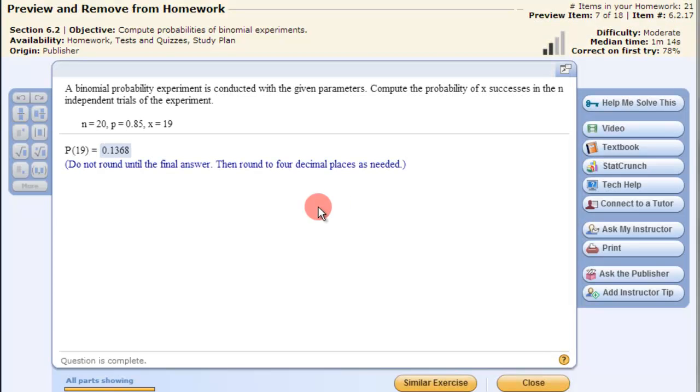In this video we'll look at binomial probability experiments and computing them on the TI-83/84 calculator. Here we're going to compute the probability of X number of successes in N independent trials of an experiment.